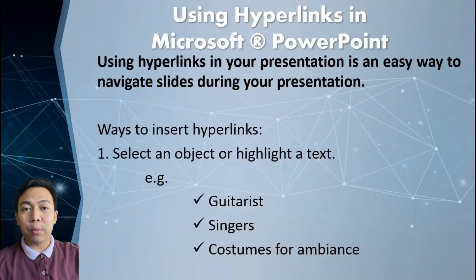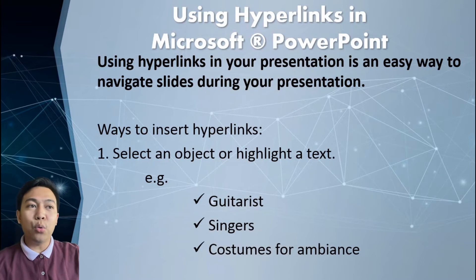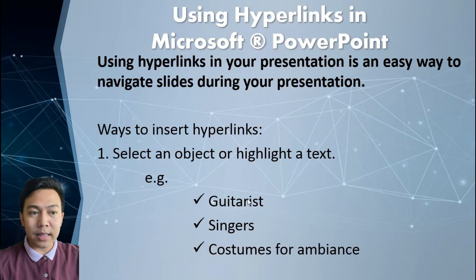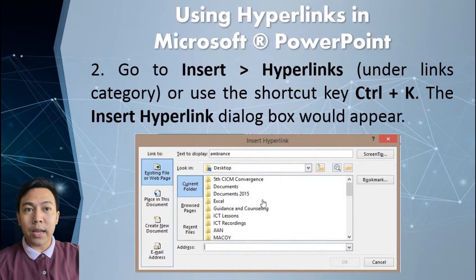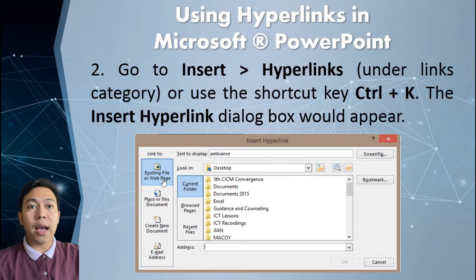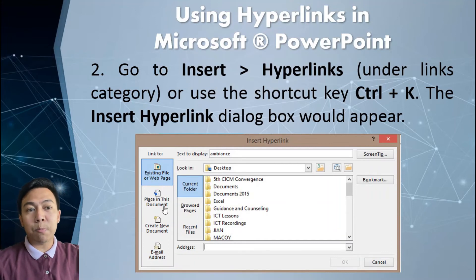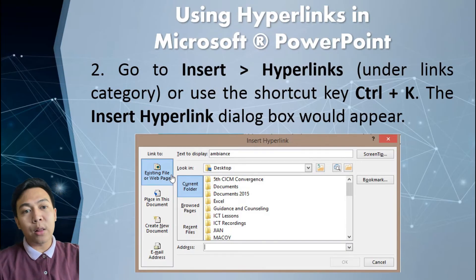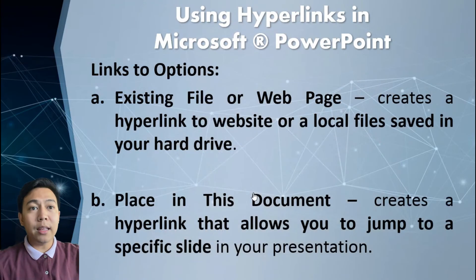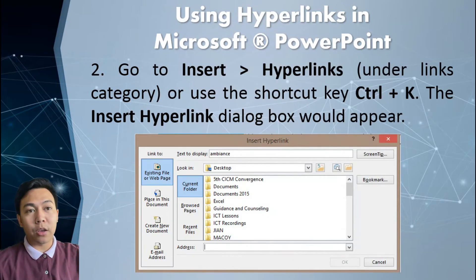So using hyperlinks in Microsoft PowerPoint — this is one feature of MS PowerPoint that we need to understand. A hyperlink in your presentation is an easy way to navigate slides across your presentation. To create a hyperlink, first select an object or highlight a text — for example, guitar, singer, costume, or ambience. Highlight the text, then go to Insert > Hyperlinks, or use Ctrl+K to bring up the insert hyperlink dialog box. You have four types of linking: existing file or web page, place in this document, create new document, or email address. By default, existing file or web page allows you to open a Word file, PowerPoint file, video file, and so on using the hyperlink.